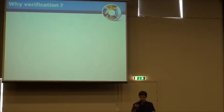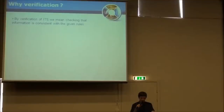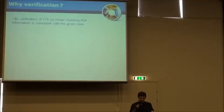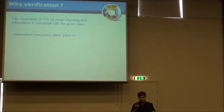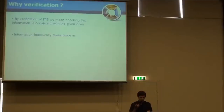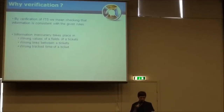So everything is fine — why do we need verification? By verification of an issue tracking system, we mean checking that information is consistent within given rules. Information inaccuracies usually happen when many people try to manage the same piece of knowledge — developers, QA engineers, project managers, and others. In practice, we can see that information inaccuracy usually takes place in wrong values or fields of a ticket, wrong links between tickets, and wrong tracking and time of a ticket.